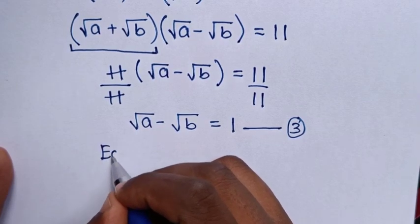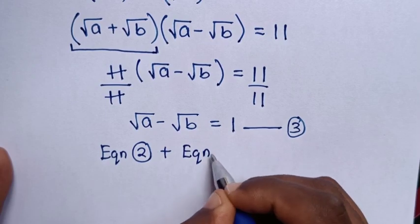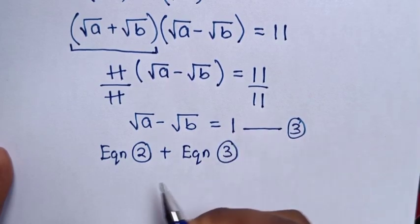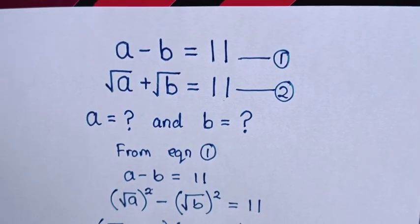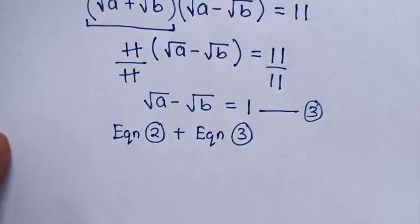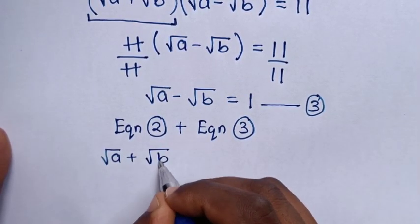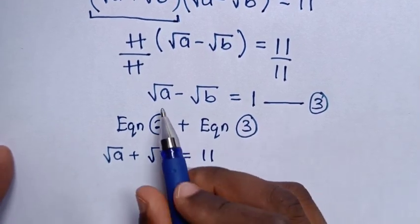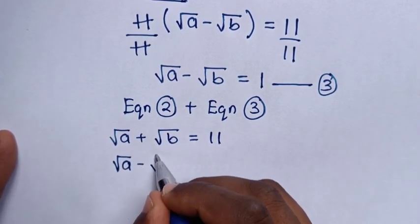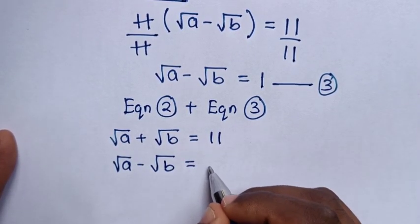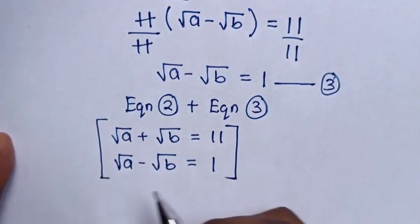Next, we add equation 2 and equation 3 using the elimination method. Equation 2 is square root of a plus square root of b equals 11, and equation 3 is square root of a minus square root of b equals 1.